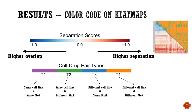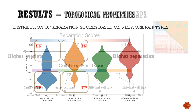Now I would like to explain the color code on the matrices. On the lower triangles, you see the separation scores. Negative results are on the blue scale and negativity means network overlap. Positive results lie on the red scale, and the higher the separation score, the more separated the two networks are. We also defined four types of network pairs that are reflected on the upper triangle. T1, T2, T3, and T4 refer to the combinations of the similarity based on cell line and mechanism of action of the drugs.